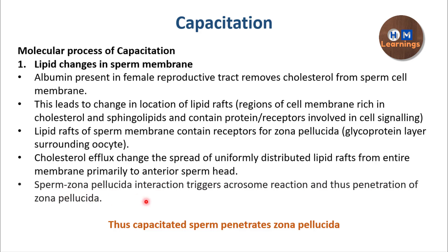In this way, capacitation helps the sperm interact with the zona pellucida layer of the oocyte. After interaction, there will be an acrosomal reaction which helps in the penetration through the zona pellucida to reach the egg. The lipid changes in the membrane help the interaction between the sperm and the zona pellucida, ultimately leading to the penetration of the sperm through that layer to reach the egg membrane.